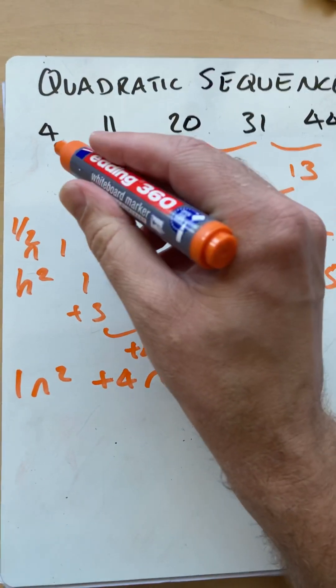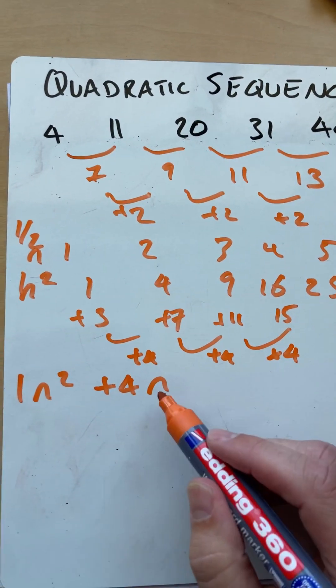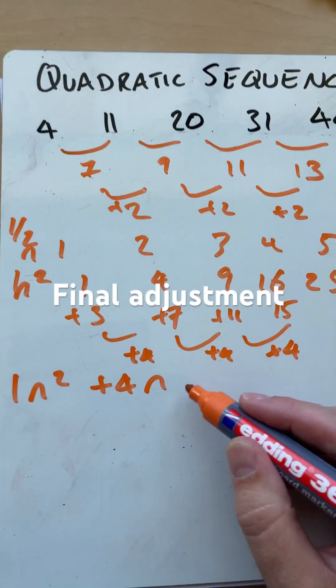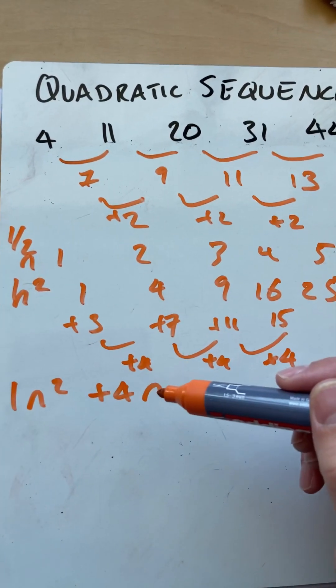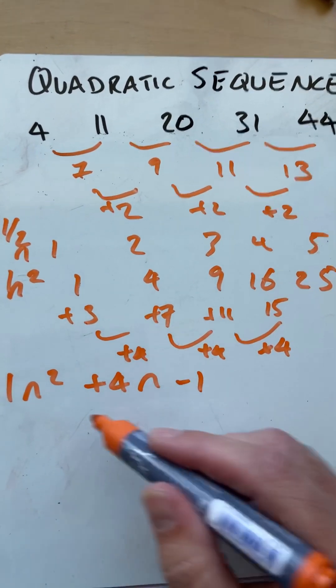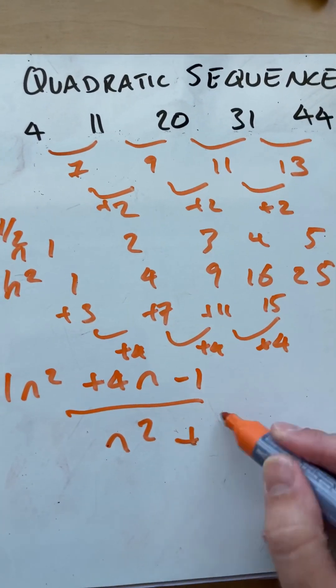But to adjust to that, 1 plus 4 is 5. So I need to subtract 1. Check with the next term. If I put 2 into there, 2 squared plus 8 is 12. I need a minus 1. There we go. n squared plus 4n minus 1.